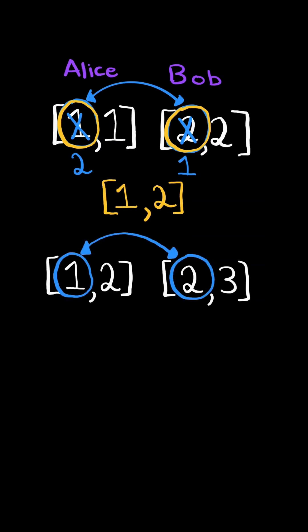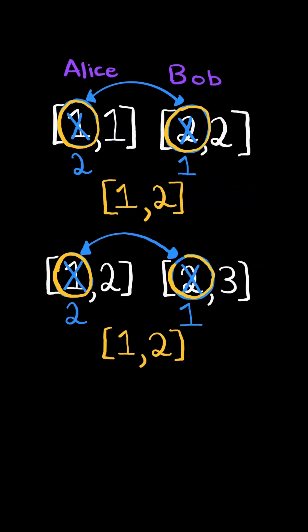Consider this new example. Alice can swap her box containing one candy with Bob's box containing two candies. This swap results in Alice and Bob having the same amount of total candies. So we return the number of candies that Alice swapped and the number of candies that Bob swapped.